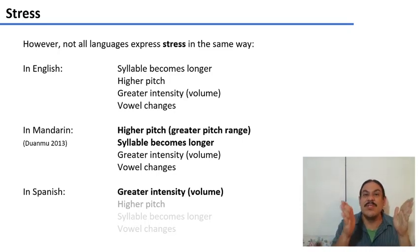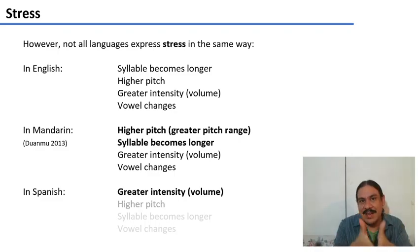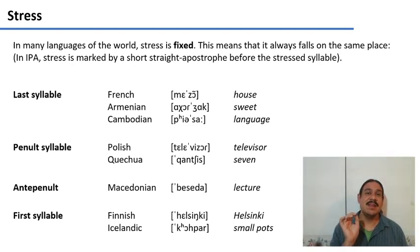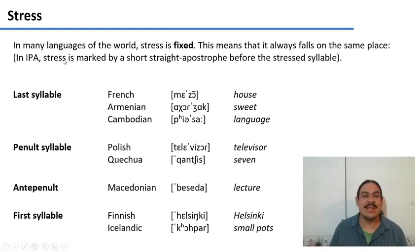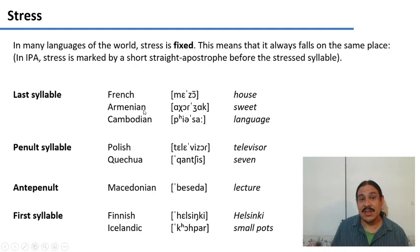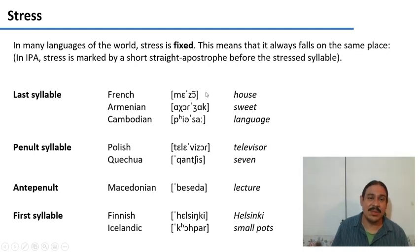Stress is not just one phonetic thing — it's a bundle of different phonetic phenomena that you interpret as stress. In many languages stress is fixed, meaning it falls on a fixed syllable in the word. For example, in French stress is always assigned to the last syllable of the word, like in 'maison' (house). This also happens in languages like Armenian and Cambodian, where the last syllable gets the stress.